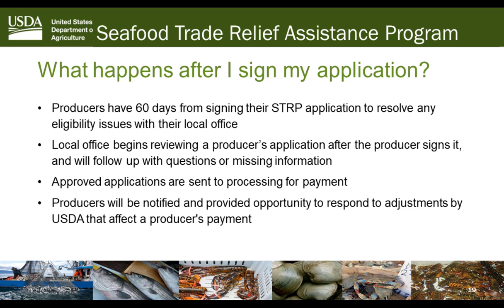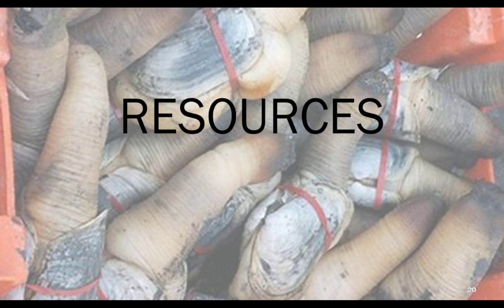After you sign your application, you have 60 days to resolve any issues or submit any additional requests from the county office. Missing that deadline could jeopardize your payment — though not necessarily the review and approval of the application itself. FSA looks at your application for the program separately from your payment eligibility documents.